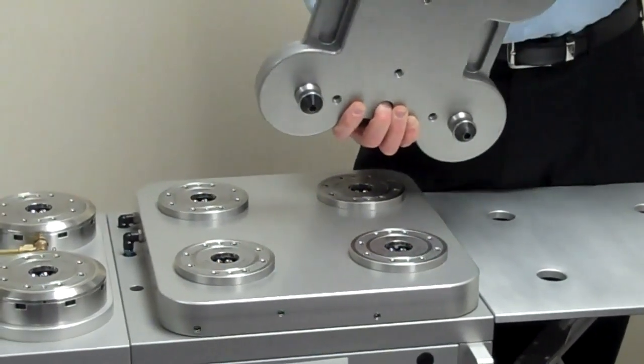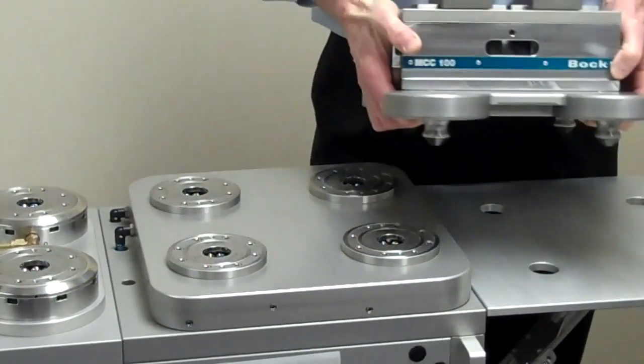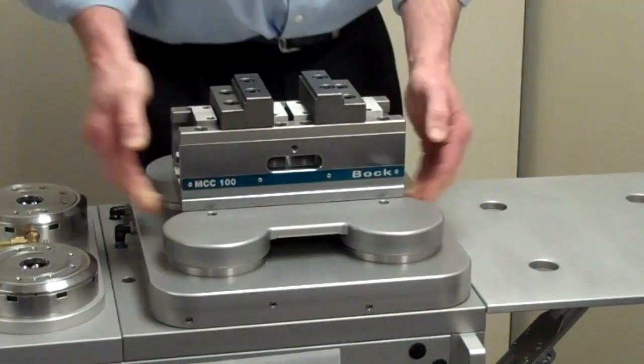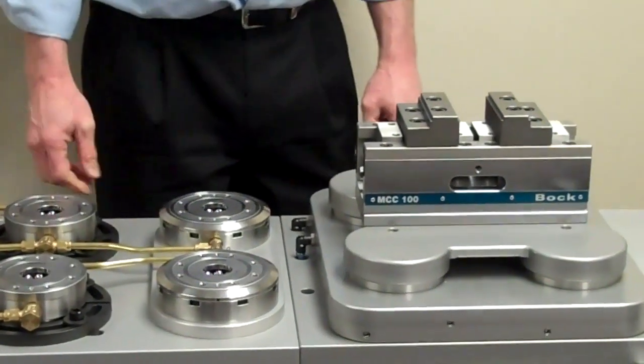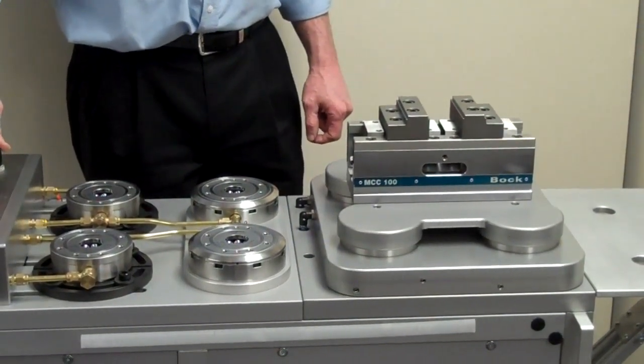As you can see, even the heavy fixture plate and vise can easily be located, centered, dropped into position. The pneumatic switch is pulled and it is securely locked into place.